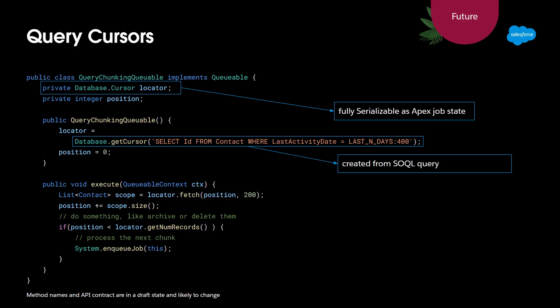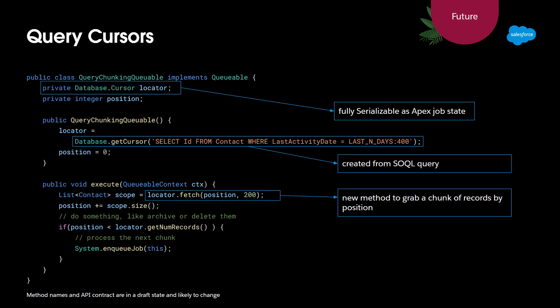The interesting part happens when the queueable runs. On execution, the queueable job can go to the cursor and fetch a subset of records from the overall SOQL query result set. This is not using offset under the hood - that's one of the key features. If you were using offset traditionally, you'd run into the 2000-record limit. With this cursor, you can go through the entire SOQL result set, making it ideal for scenarios like a page controller where the user jumps back and forward through a large volume of records.